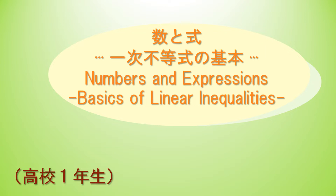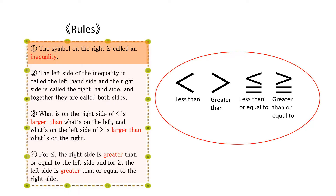The symbols circled in red from left to right — less than, greater than, less than or equal to, and greater than or equal to — are collectively called inequality signs.